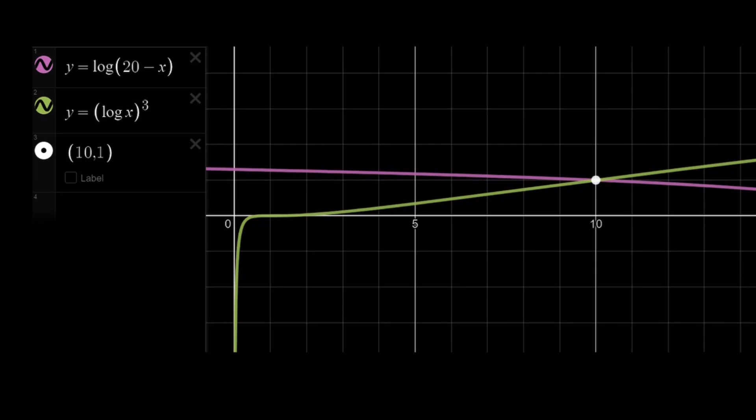Like I said earlier, log(20 - x), which is the pink, purple, whatever the color is looking one, it's decreasing. And the other function, log x to the third power, the green one, is increasing and they happen to intersect at (10, 1).